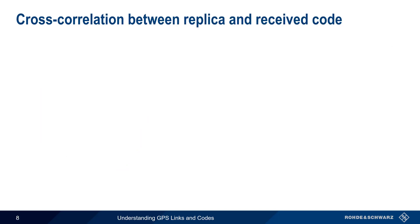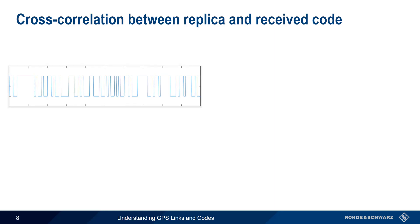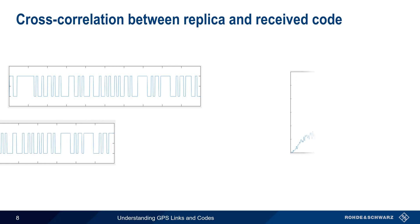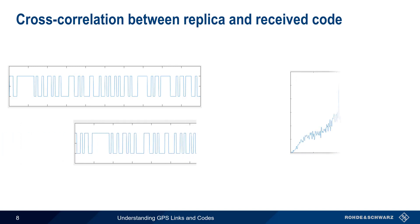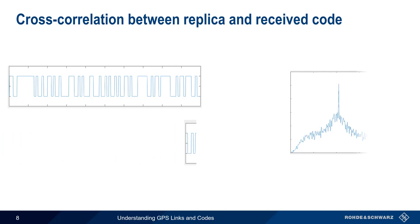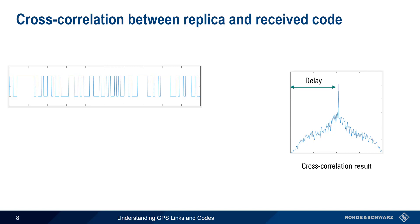Let's visualize how this works. First, we generate a local replica of a satellite's known pseudocode, and then we slide the received code and replica codes past each other, and calculate the cross-correlation. The offset between the received and replica code provides us with the signal delay, which is used to calculate the range to the satellite.